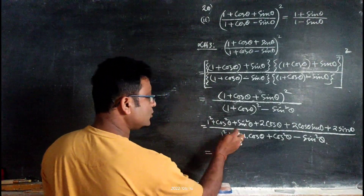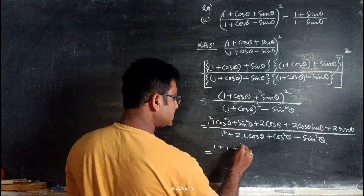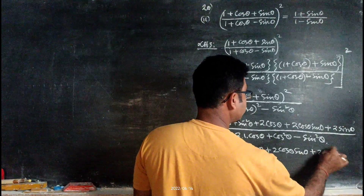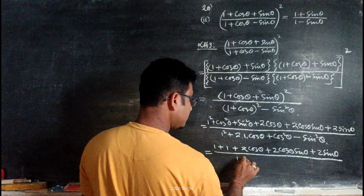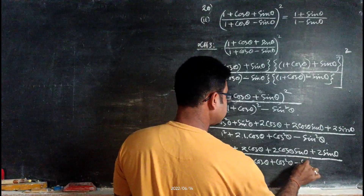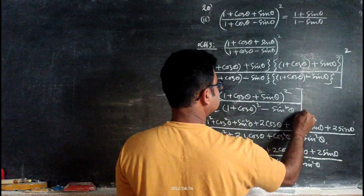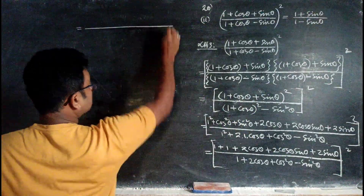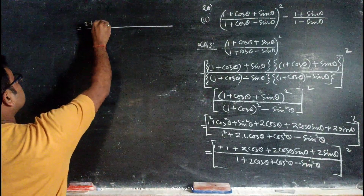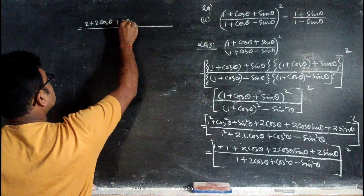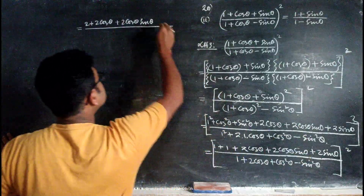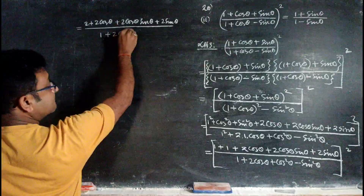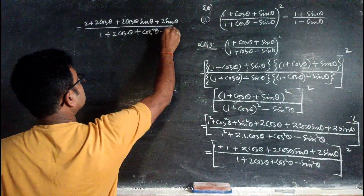In the numerator, we know sin²θ + cos²θ = 1, so we write 1 + 1 + 2cosθ + 2cosθ·sinθ + 2sinθ, which gives 2 + 2cosθ + 2cosθ·sinθ + 2sinθ. In the denominator it will be 1 + 2cosθ + cos²θ - sin²θ.